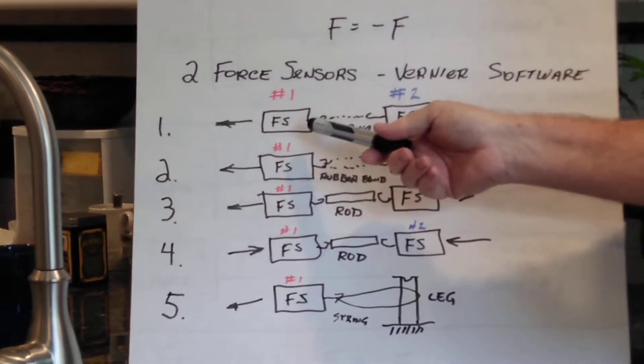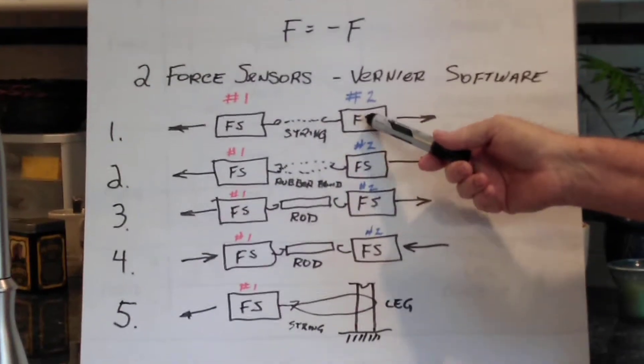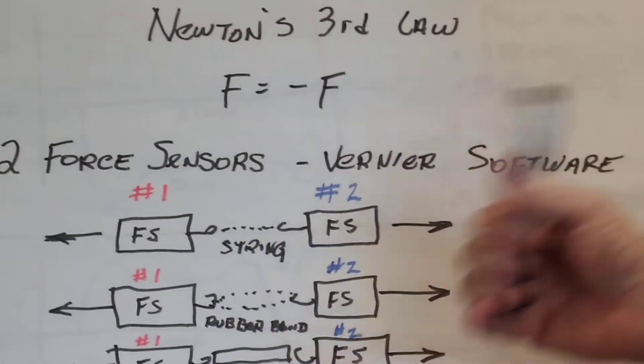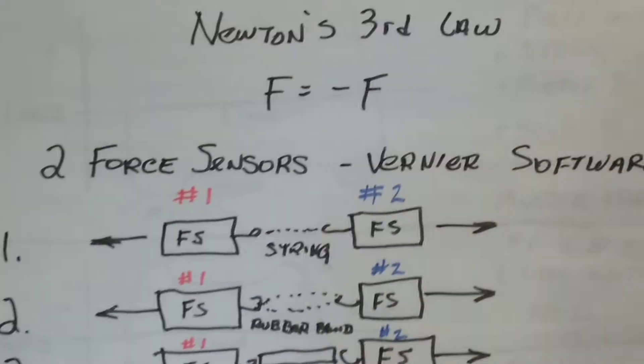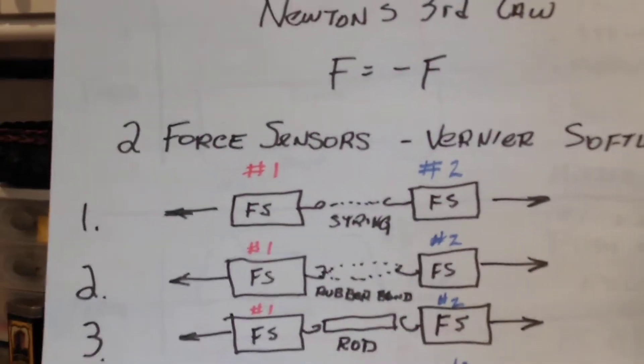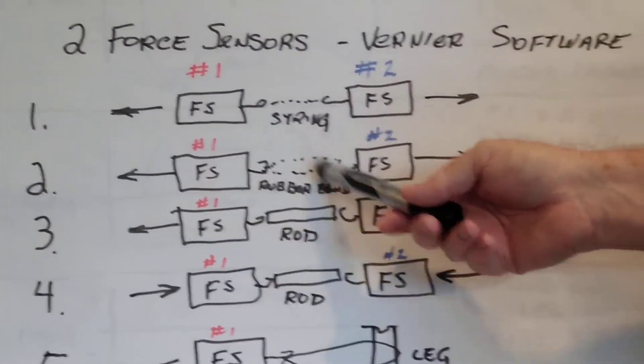In the first scenario we have two force sensors with a string attaching both of them, and we pull in opposite directions to see what the reaction is. In our second scenario we replace the string with a rubber band and see if that makes any difference.